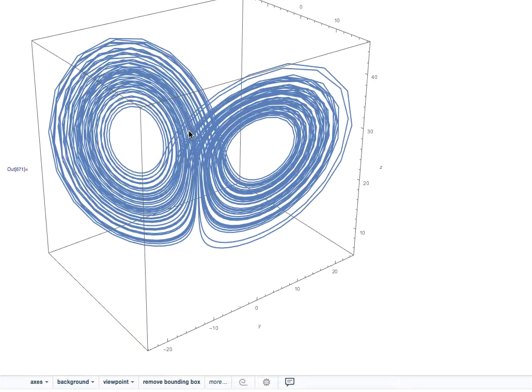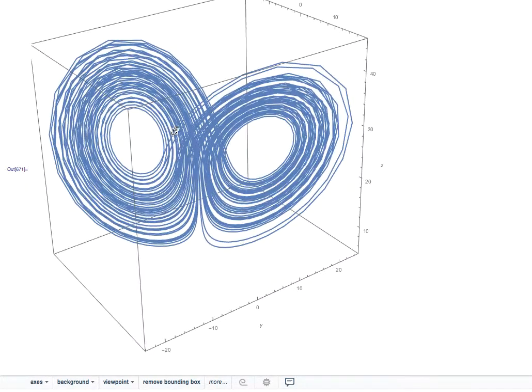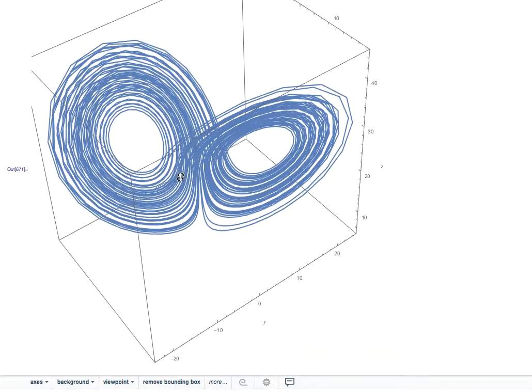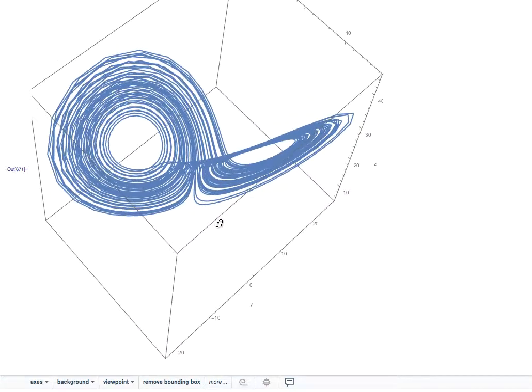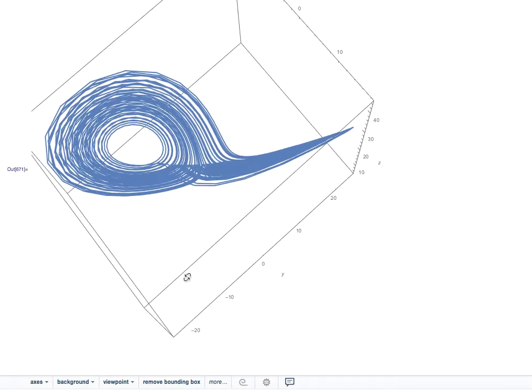To do a little bit of a recap, as we began to think about strange attractors and chaos, we started with the Lorenz system. The Lorenz system was a system of three differential equations, so a flow in time.